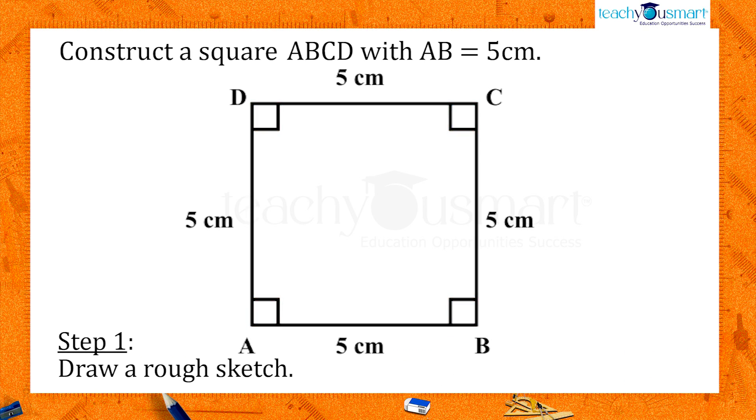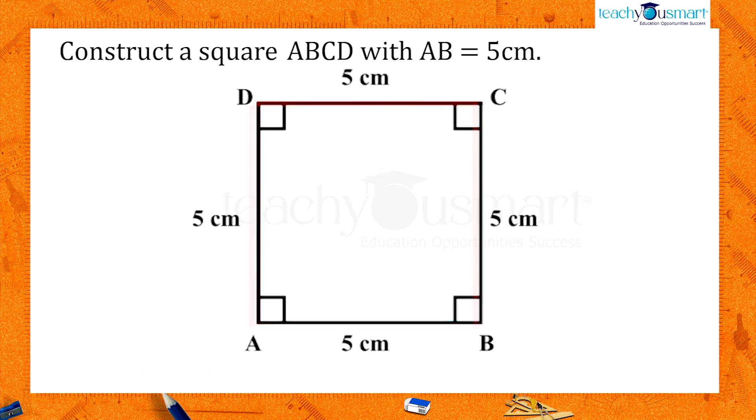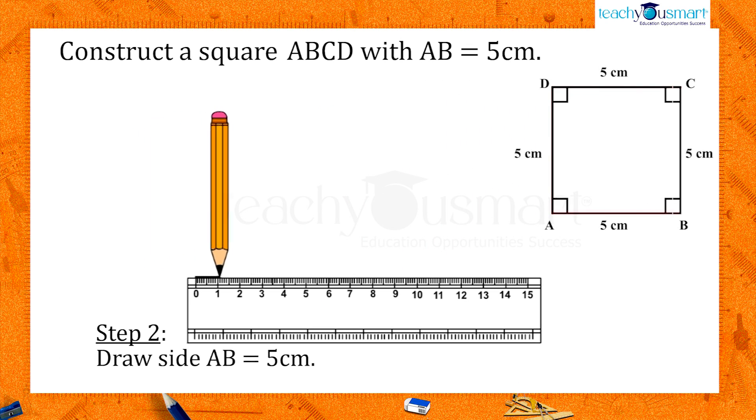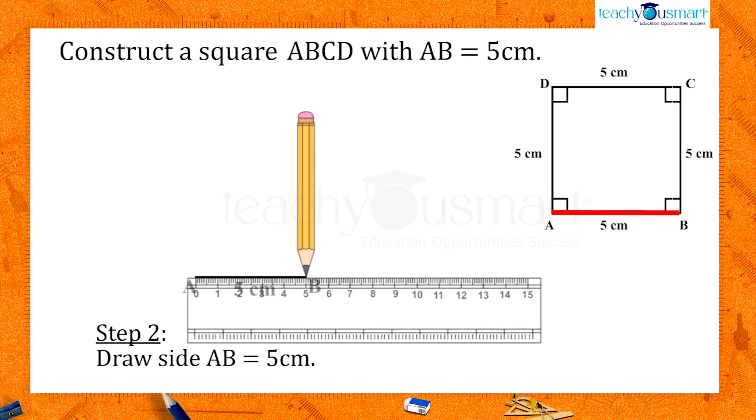Let's draw a rough sketch of a square ABCD. Now let's start our construction by drawing the side AB equals five centimeters.